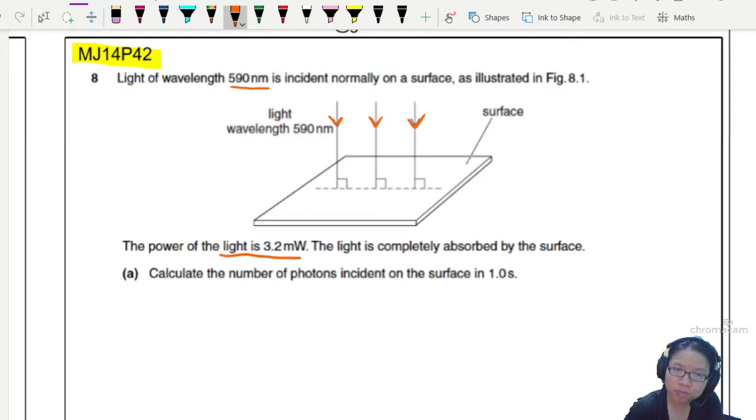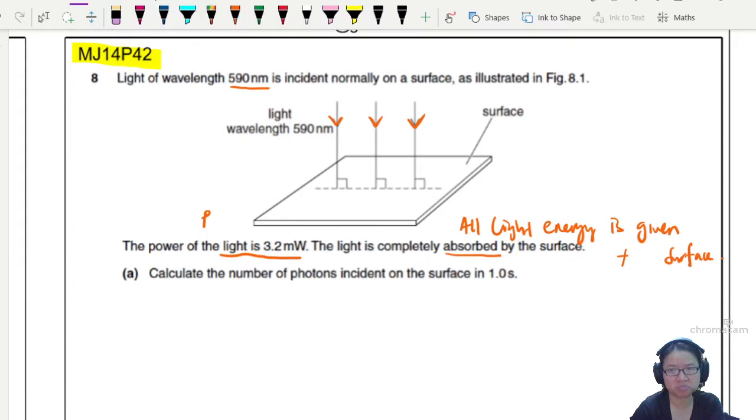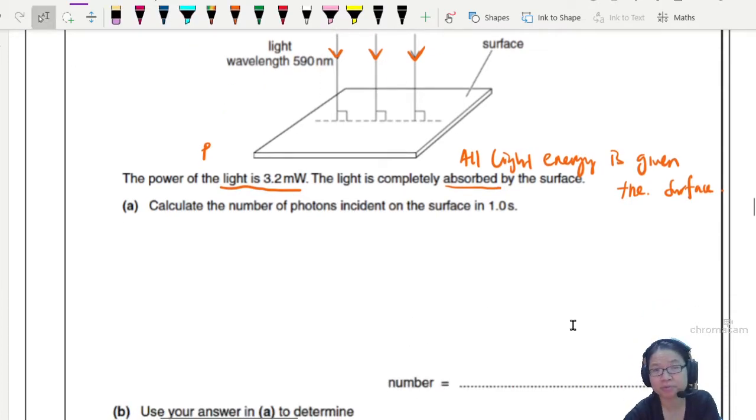Power of light is 3.2 milliwatt. Light is completely absorbed by the surface, so I assume that all the energy is given to the surface. What surface is this? Just the surface. Very vague, huh CIE? So calculate the number of photons incident on the surface in one second.